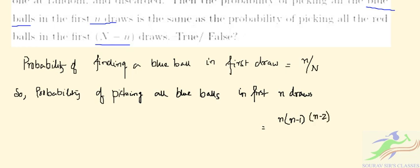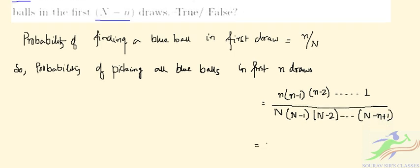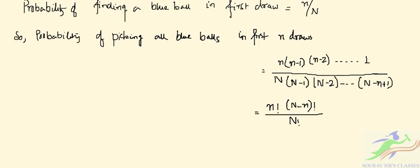And in the denominator it will be N, N minus 1, N minus 2, down to N minus n plus 1. So this simplifies to n factorial times (N minus n) factorial divided by N factorial.